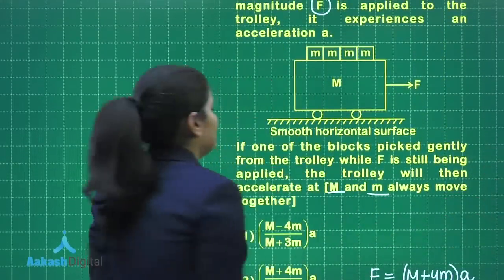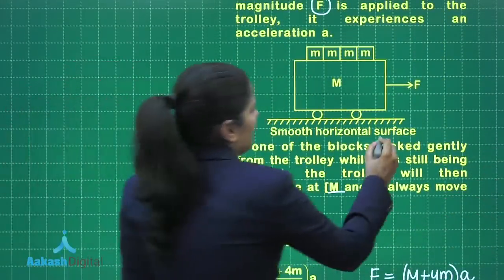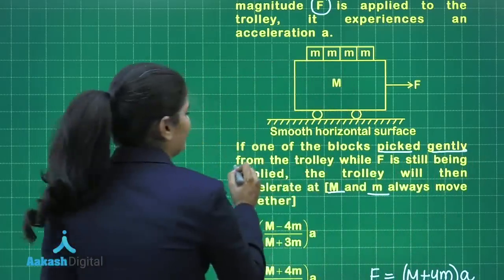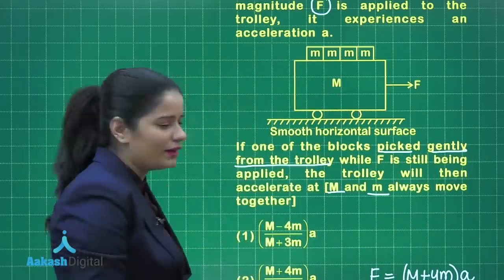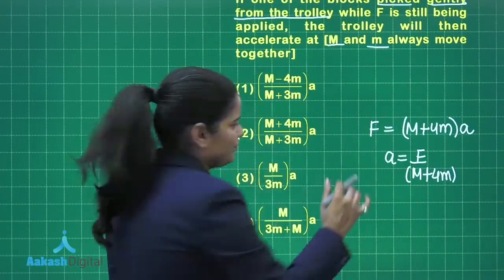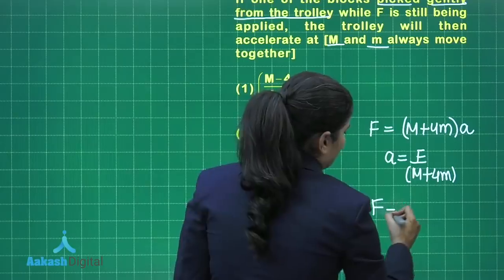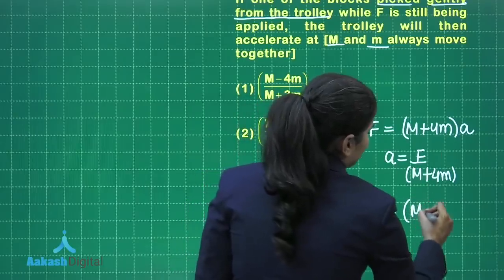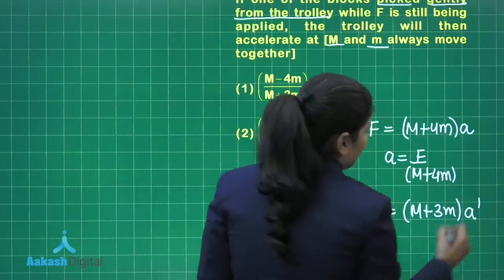The question further says, if one of the blocks is picked gently from the trolley, we are removing one block. The force remains the same, so that is again F. The new total mass will be M plus 3M into A dash.